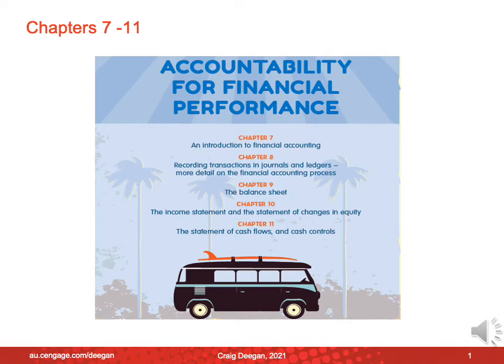Chapter 7 will introduce financial accounting, again using our accountability model. Chapter 8 will look at how we might record transactions in journals and ledgers. Chapter 9 will concentrate on the balance sheet. Chapter 10 on the income statement and the statement of changes in equity. And Chapter 11 will concentrate on the statement of cash flows and related cash controls.